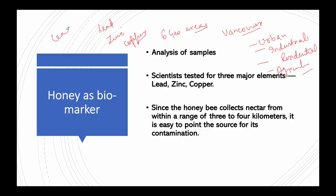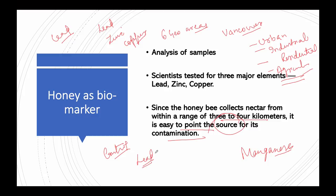The results showed that areas with heavy vehicle movement and industrial activity had increased concentrations of lead in the honey. Samples from agricultural areas indicated high levels of manganese, which researchers suspect could be due to pesticide use. Since honeybees collect nectar from within a range of three to four kilometers, it is easy to pinpoint the source of contamination. A control was also used — natural lead from resources around Vancouver — which ruled out that the lead in the honey was from natural sources, confirming it came from vehicular movement and industrial activity.